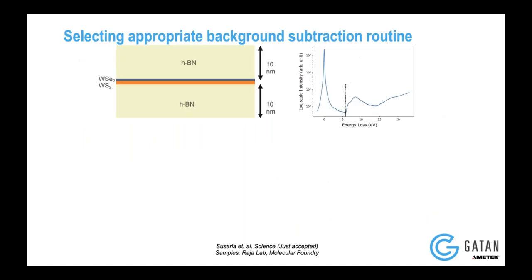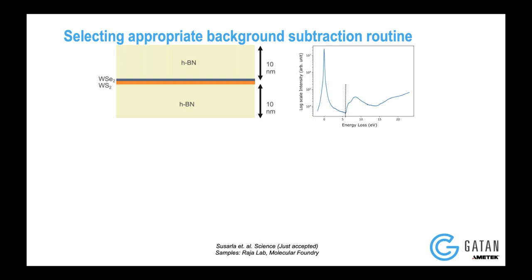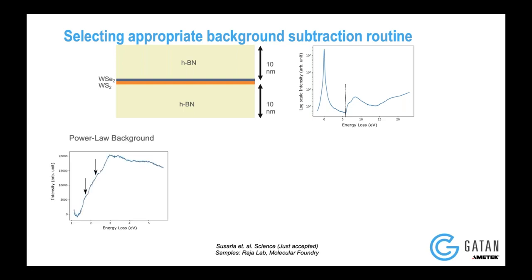We encapsulated the material with HBN in order to make sure that you have a uniform dielectric environment and that it prevents the material from damaging under the electron beam. We had this material encapsulated between two HBN layers. This was non-trivial in terms of data processing as well, because of the low signal-to-noise ratio — our routine background subtraction routines actually did not work.